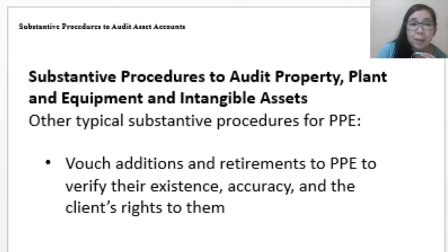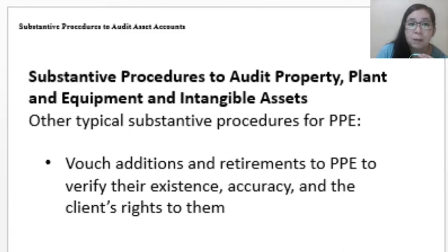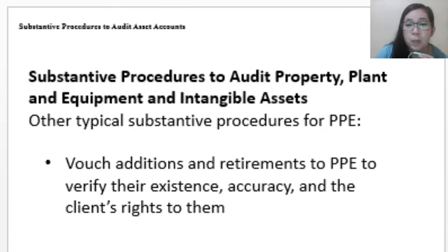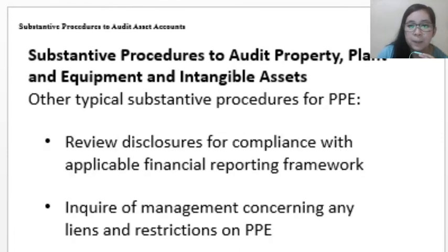Aside from those mentioned, there are other substantive procedures for PPE. The auditor can vouch any addition or retirement to property, plant, and equipment to verify its existence, accuracy in measurement, and the client's rights over those properties. Vouching means the auditor starts from the books of accounts and traces back to source documents to identify if there has been a transaction that relates to the amounts recorded in the PPE balance.